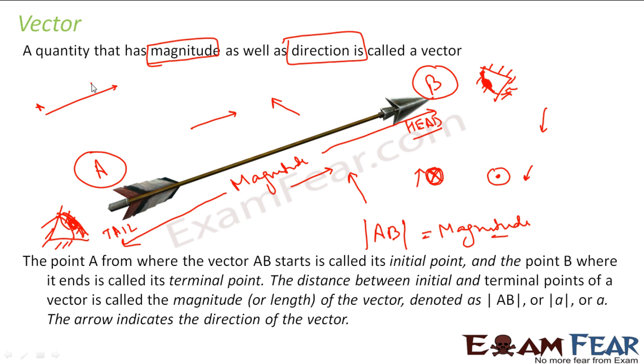So, that is how it is and for any vector, let us suppose, I will write here, vector AB, so this is my magnitude and this direction is, as you can see, A is the initial point and B is the terminal point.